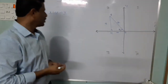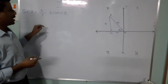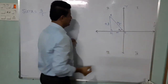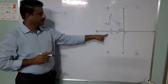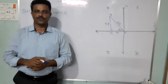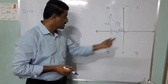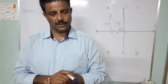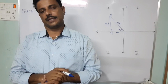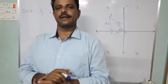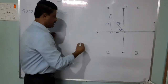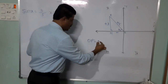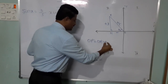Sin theta means opposite by hypotenuse. Here PM equals 3 and OP equals 5. I want to find OM using Pythagoras theorem, because OPM is a right-angled triangle. By Pythagoras theorem: OP square equals OM square plus PM square.